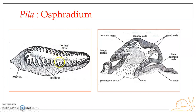The leaflets or lamellae are larger in the middle. Each leaflet is attached to the mantle wall by its broad base and to the central axis by its smaller inner side, while its outer longer side remains free. The osphradium is supplied with nerves from the left pleural ganglia.